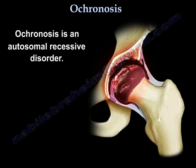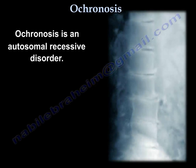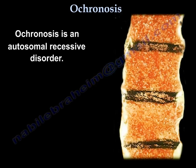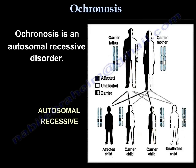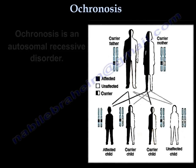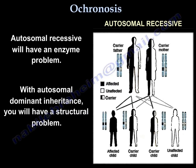Ochronosis is an autosomal recessive disorder. The autosomal recessive type will have an enzyme problem. If it is autosomal dominant, you will have a structural problem.